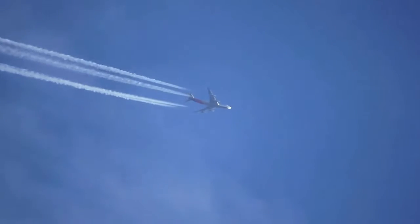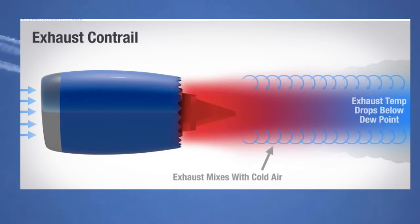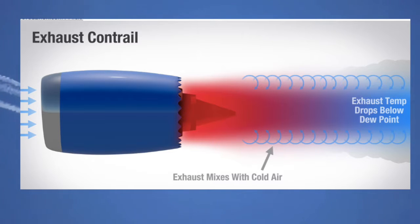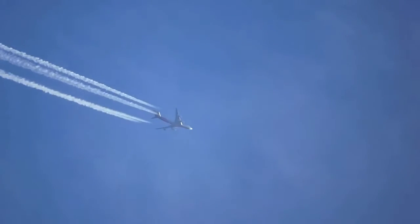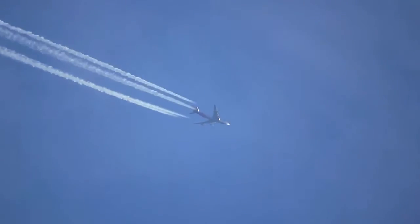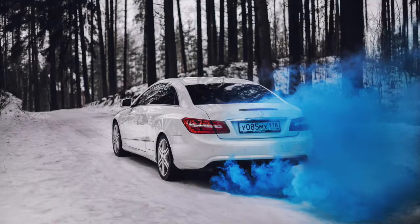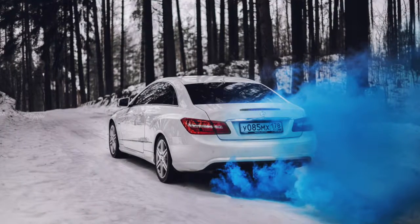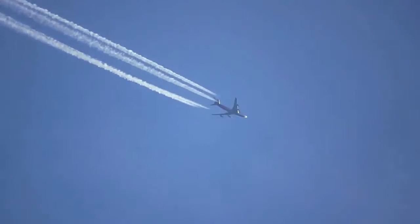Contrails are literally tiny clouds. They are formed from water vapor which freezes around small particles from the aircraft exhaust. Some of the water vapor is from the air itself, while some comes from the aircraft's own exhaust — much like your car might make a little white cloud near its exhaust on a cold morning.